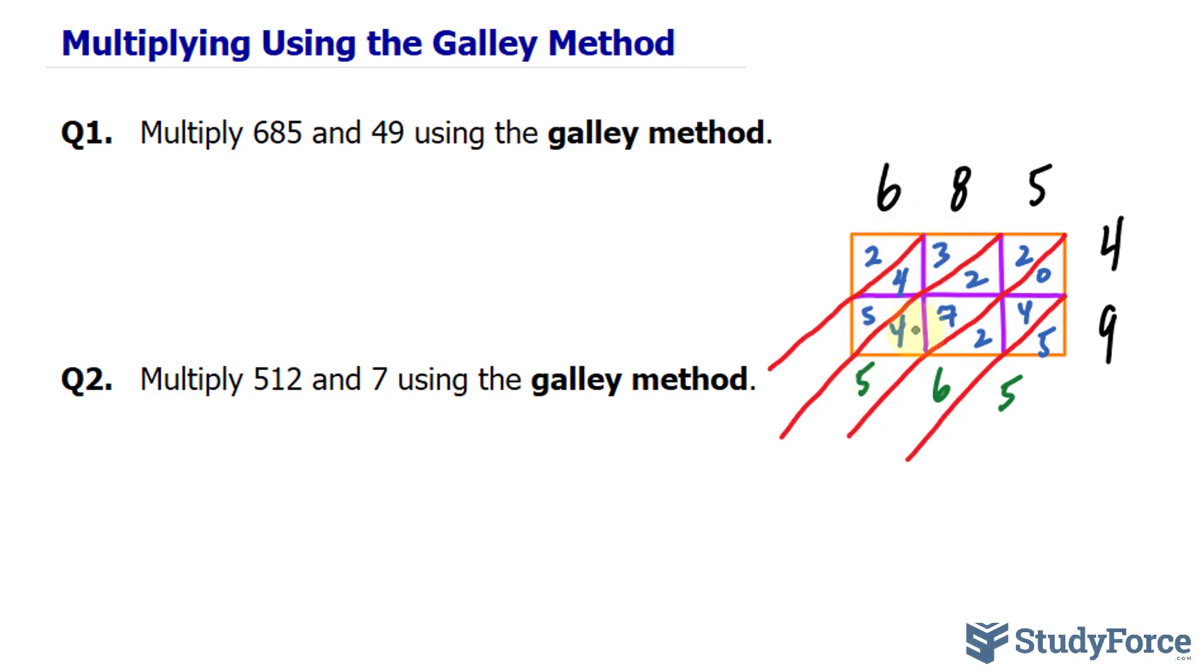So we have 1 that we got from this diagonal. Plus 3. Plus 4. That's 8. Plus 5. It's 13. Again, we carry the 1 for this last place. We have 2 plus 1 is 3.